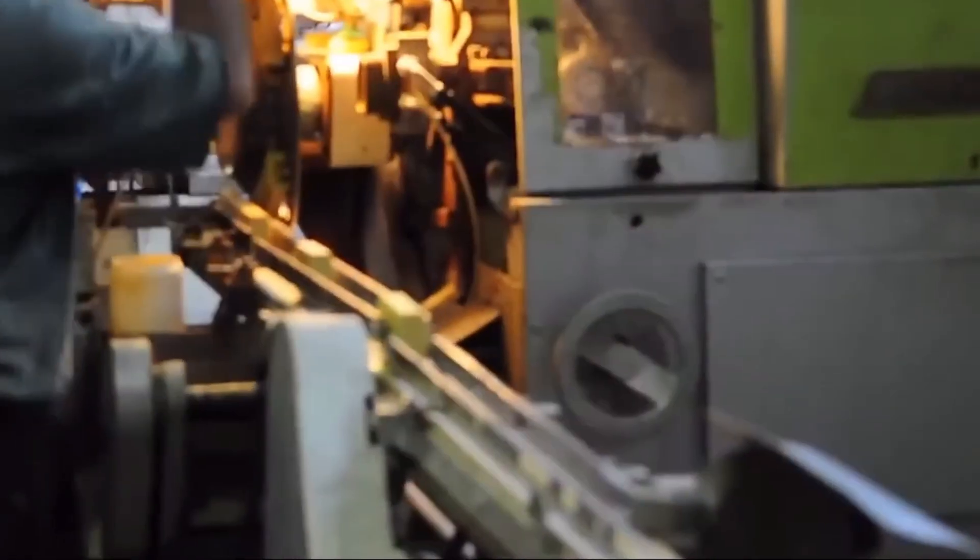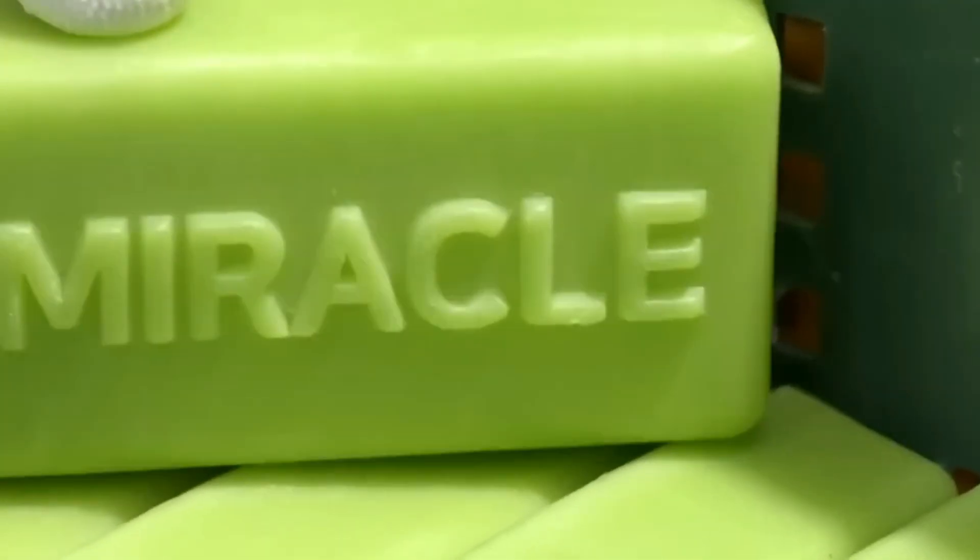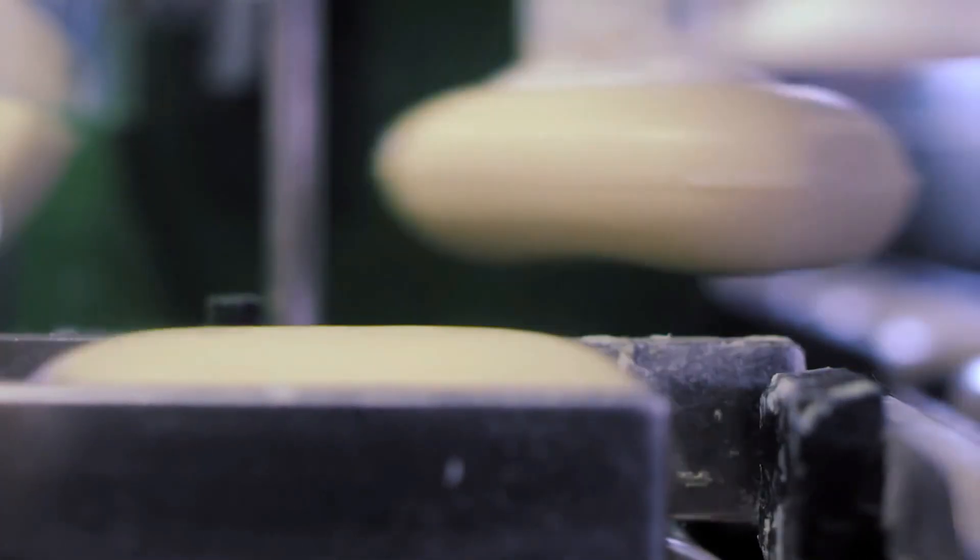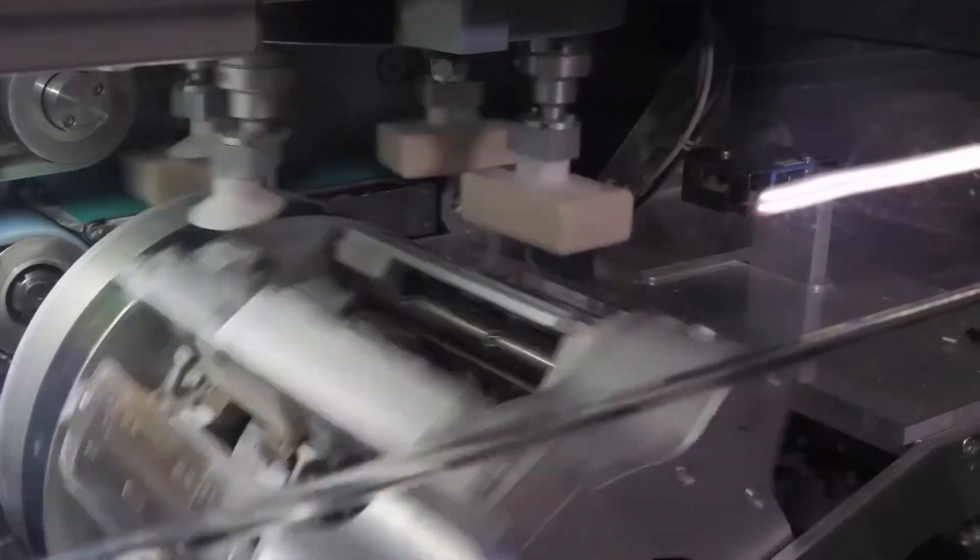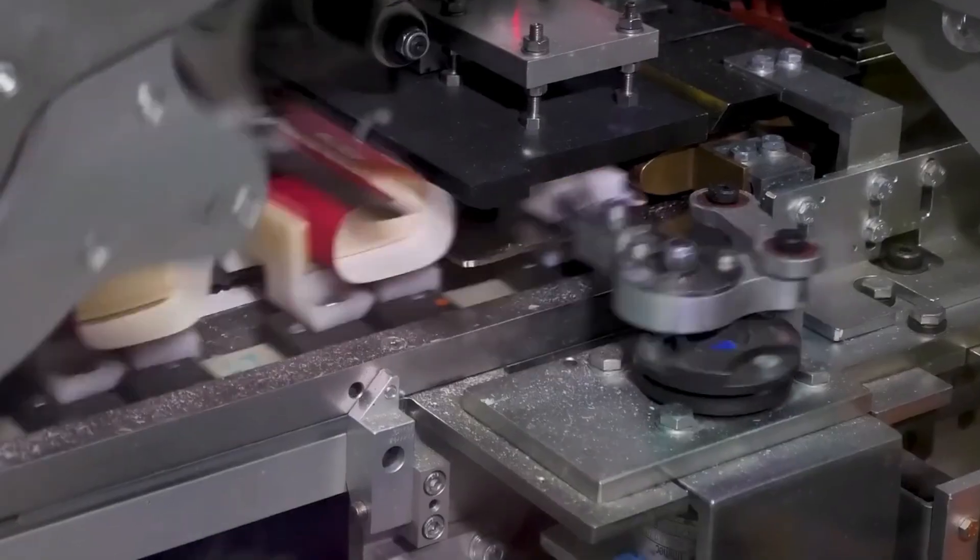Once hardened, the bars move to stamping machines. Here, metal dies press into the soap, imprinting logos, patterns, or decorative designs. It's the soap's signature moment, the final touch of identity. From a plain white block to a branded, beautiful bar, the transformation is complete.